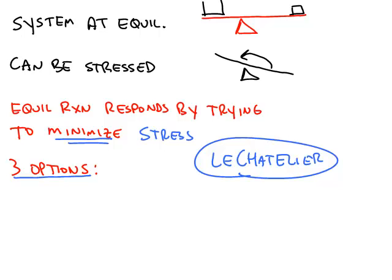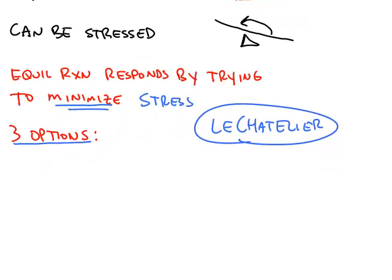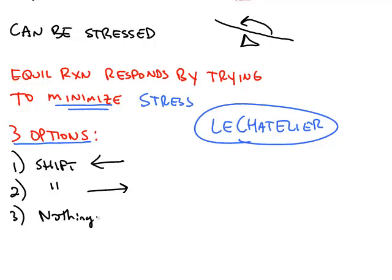The three options that a chemical system has is it can shift to the left, in other words, products turn into reactants. It can shift to the right, meaning reactants are turning into products. Or perhaps the stress has no effect on the equilibrium and it's not going to do anything.